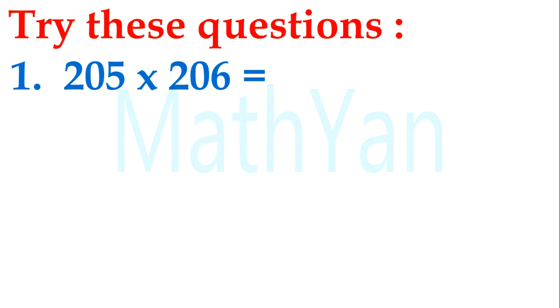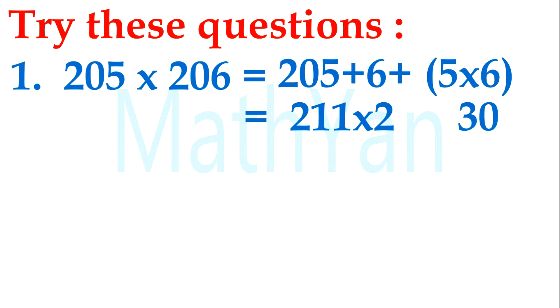Try this question. Horizontal way: 205 times 206. So 205 plus 6. The back number is 5 times 6. So 205 plus 6 is 211. Remember, times 2 because of base 200. So the number behind is 5 times 6, 30. So 42230. 211 times 2 is 422.